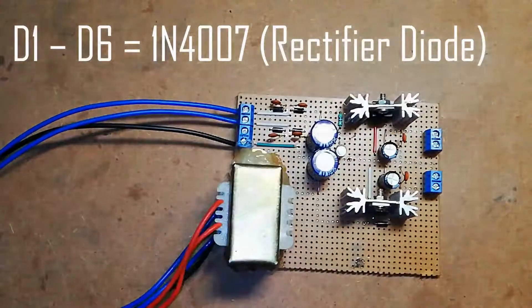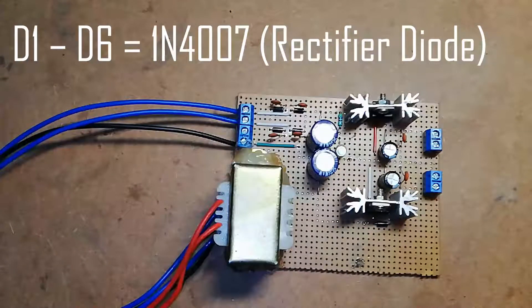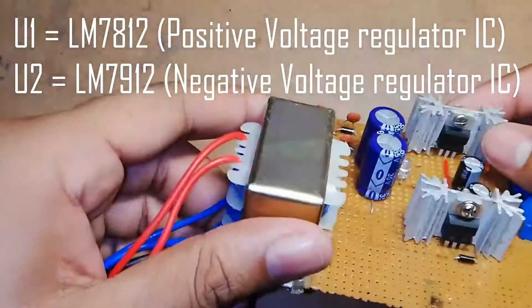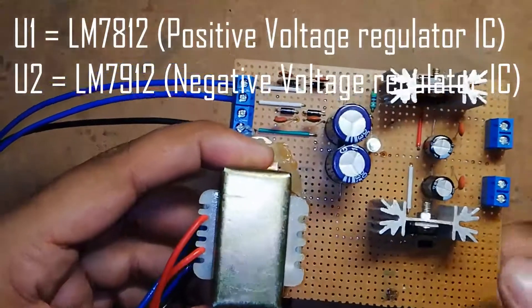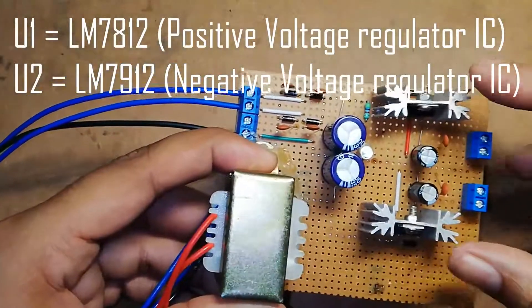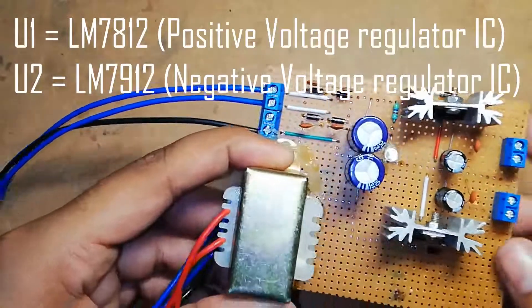For positive voltage regulator we are using 7812. Similarly for negative power supply we are using LM7912. These two voltage regulators are linear positive and negative voltage regulators.